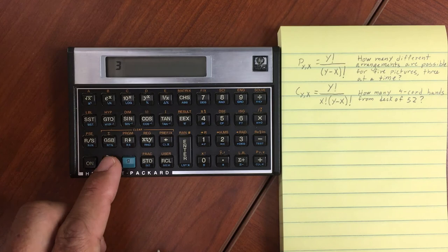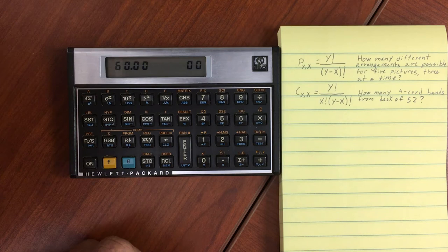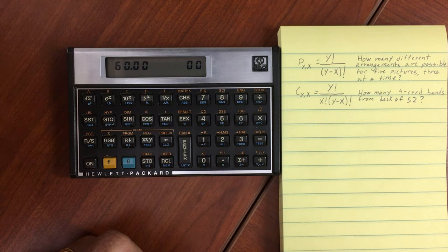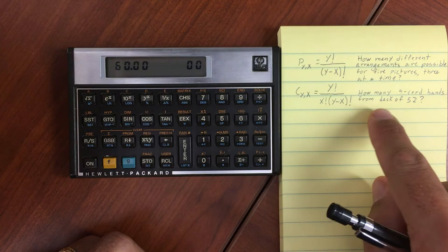Now, hit the Gold Shift. It runs and it says there are 60 different permutations if we have five different pictures and we're choosing three at a time to hang on the wall, or to arrange, or whatever we're doing with them.